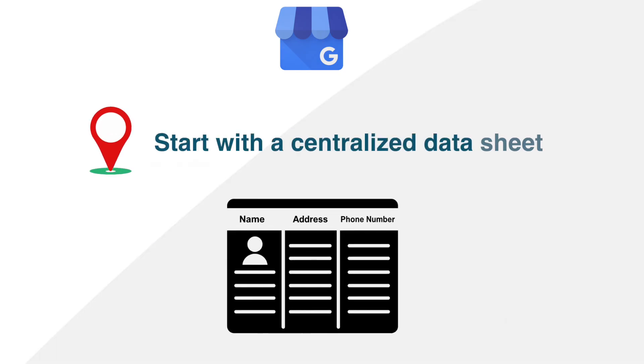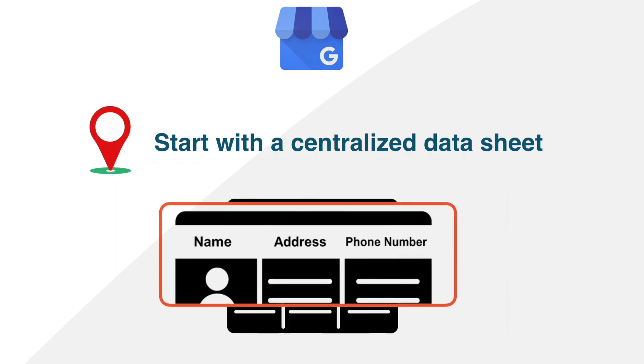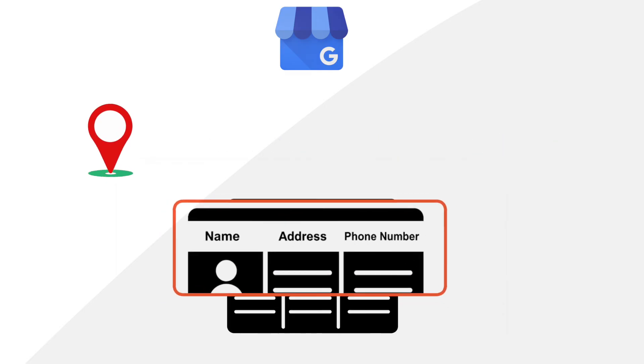Item number one: start with a centralized data sheet that you keep up to date. This is going to be absolutely critical. All of the name, address, phone number information, as well as corresponding URLs for all the locations, is critical to keep centralized in a secure place.